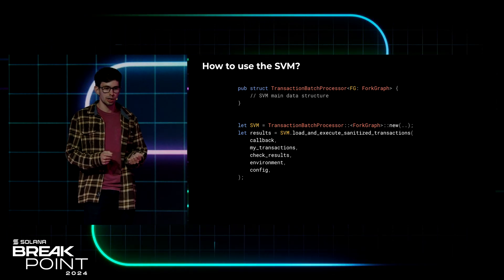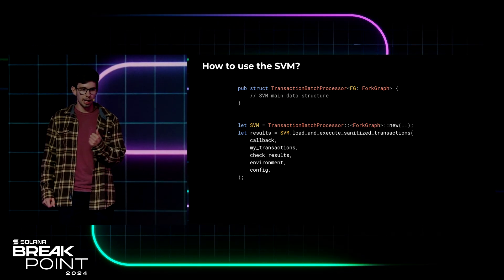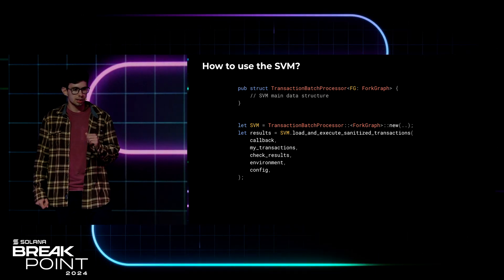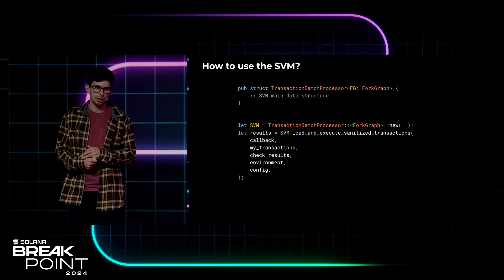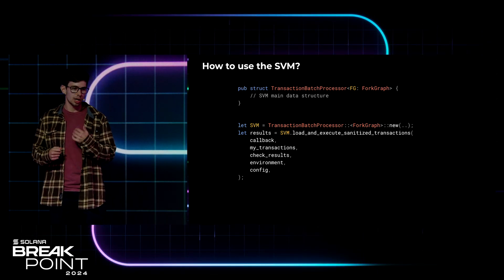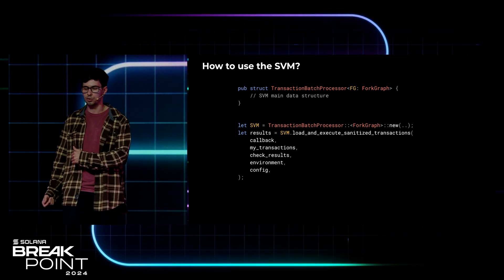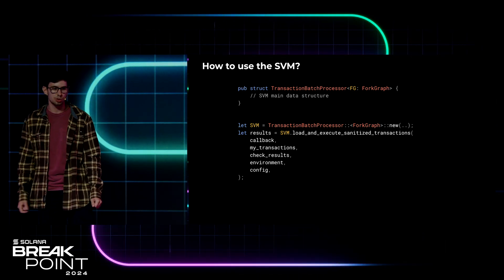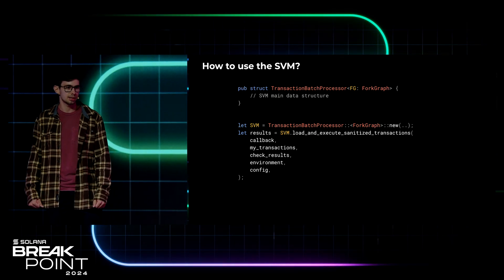The SVM entry point is load_and_execute_sanitized_transactions. It takes five arguments: the transaction processing callback trait implementation, the transactions to process, the check results (which tell the SVM which transactions are valid for execution), the transaction processing environment, and the transaction processing config.